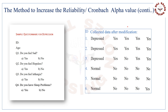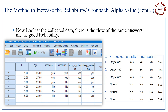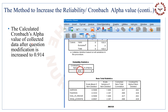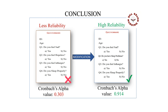Now look at the collected data after question modification — there is a flow of the same answers, meaning good reliability. During data collection there is always the chance of little variation in responses, but if there is no variation, the Cronbach's alpha value becomes 1, which means maximum reliability. The calculated Cronbach's alpha value after question modification has increased to 0.914. We have learned about reliability testing, and also about the identification and modification of problematic items to increase the reliability or Cronbach's alpha value of a self-made questionnaire.